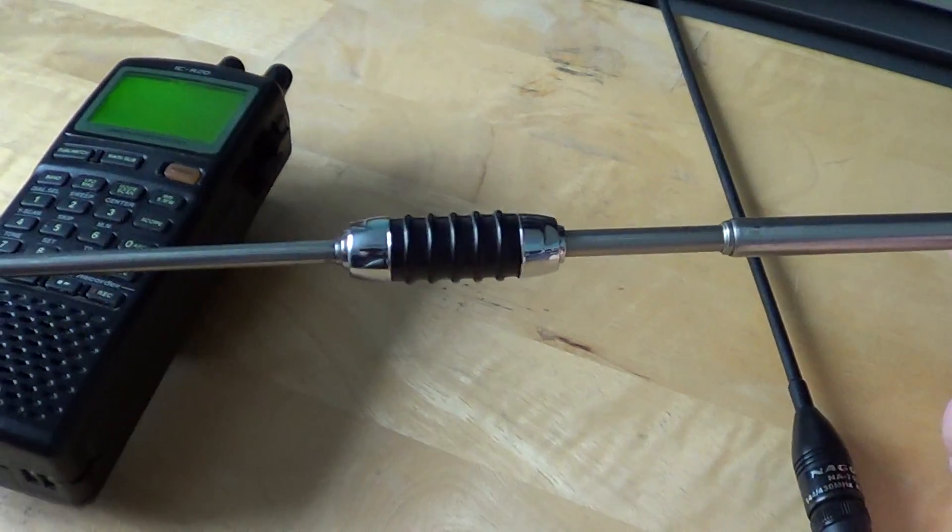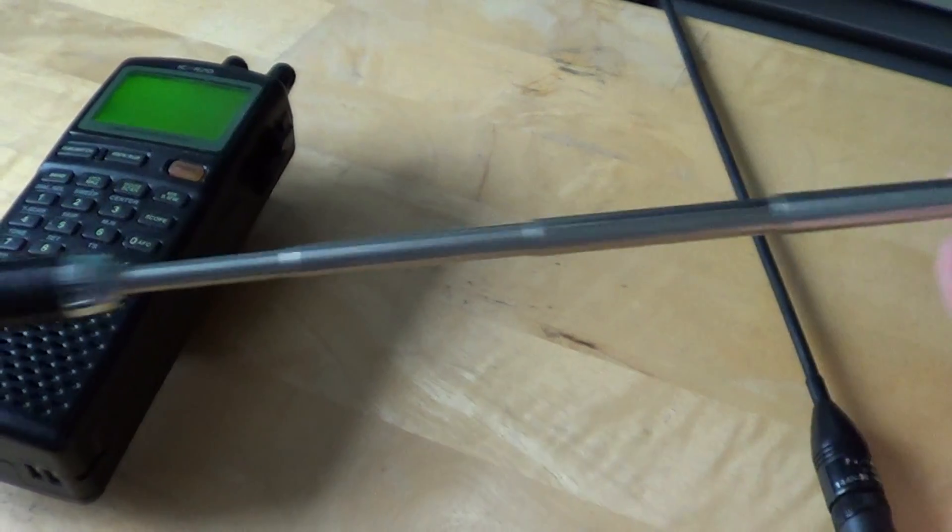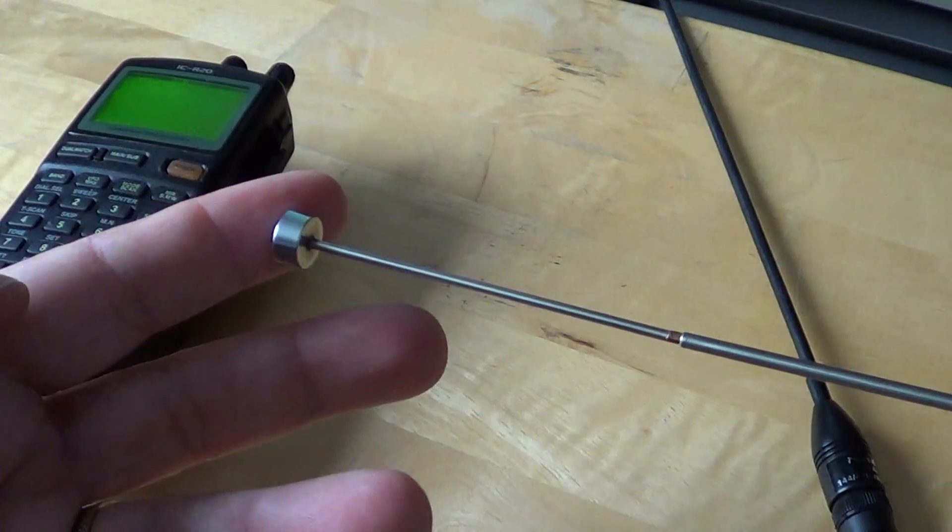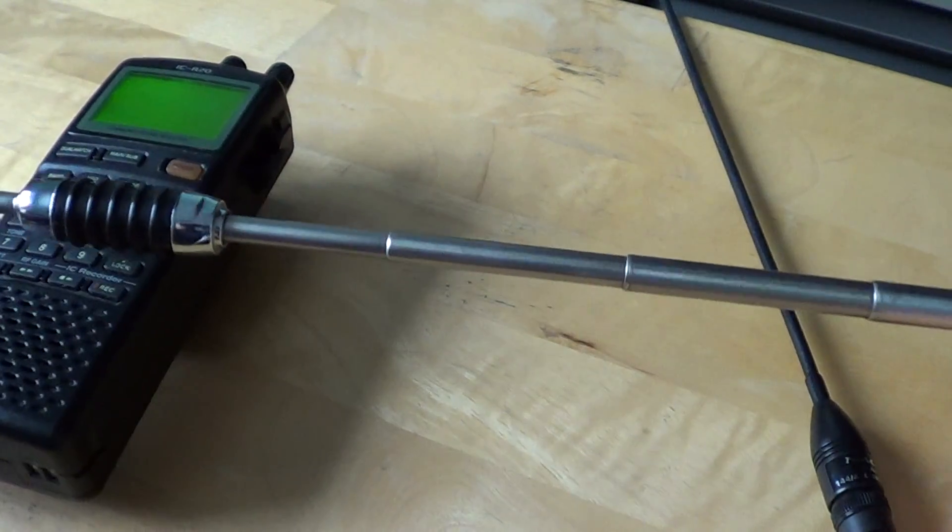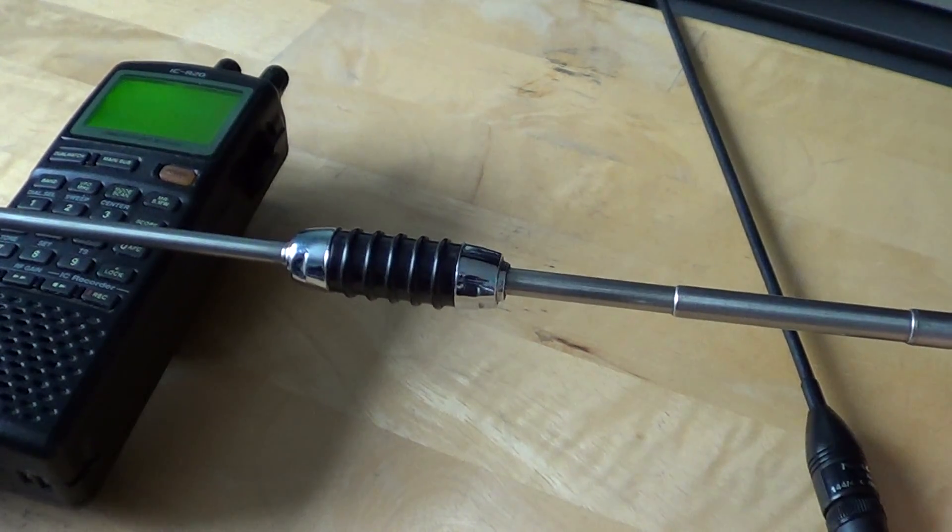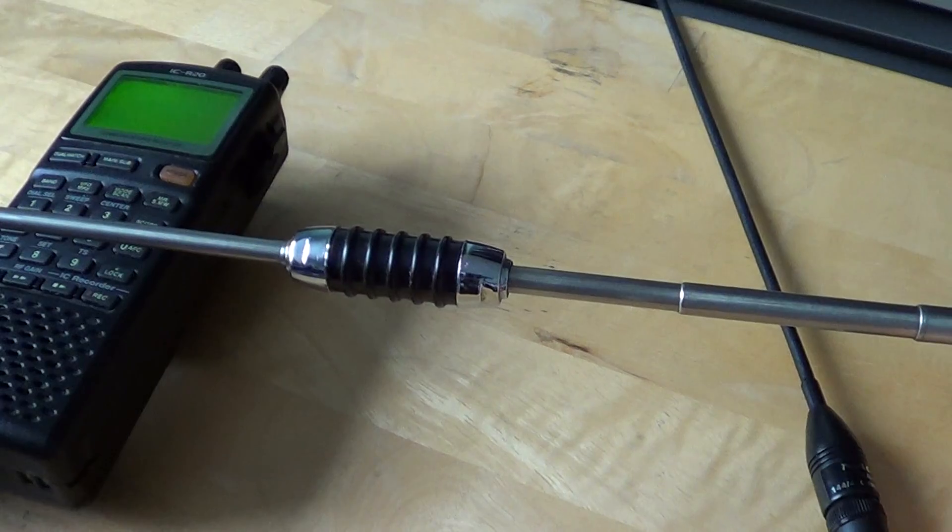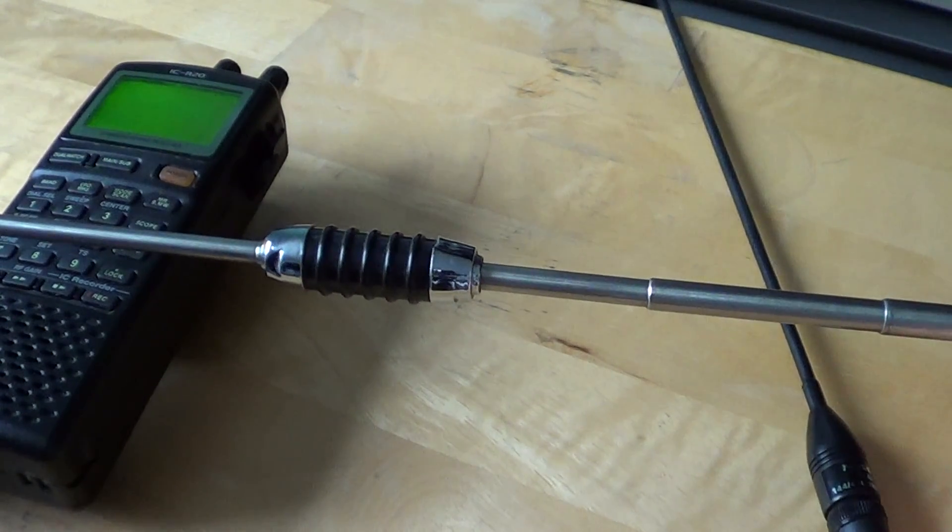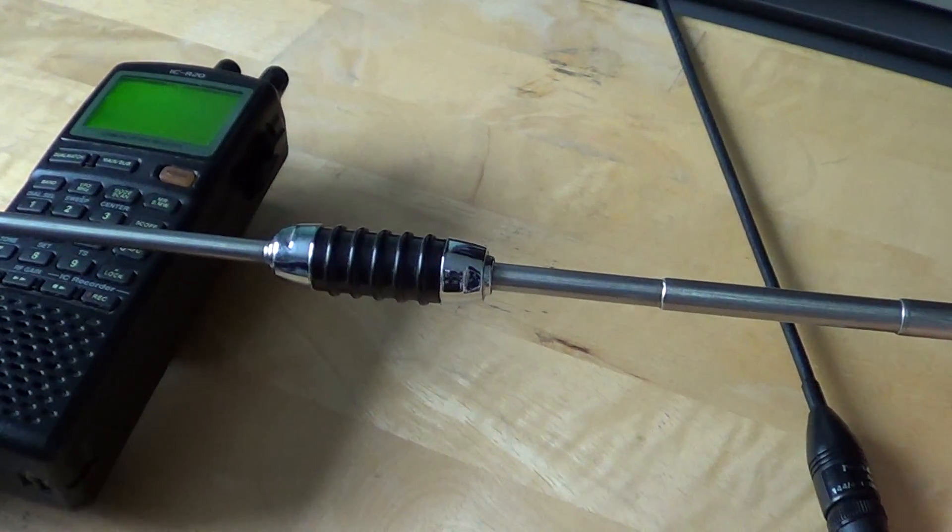First of all, they are better at receiving signals than rubber duckies most of the time. Also, the fact that they actually are extendable. One thing that you'll learn when you're using one of these antennas is that the higher you go in frequency, the shorter the antenna must be.